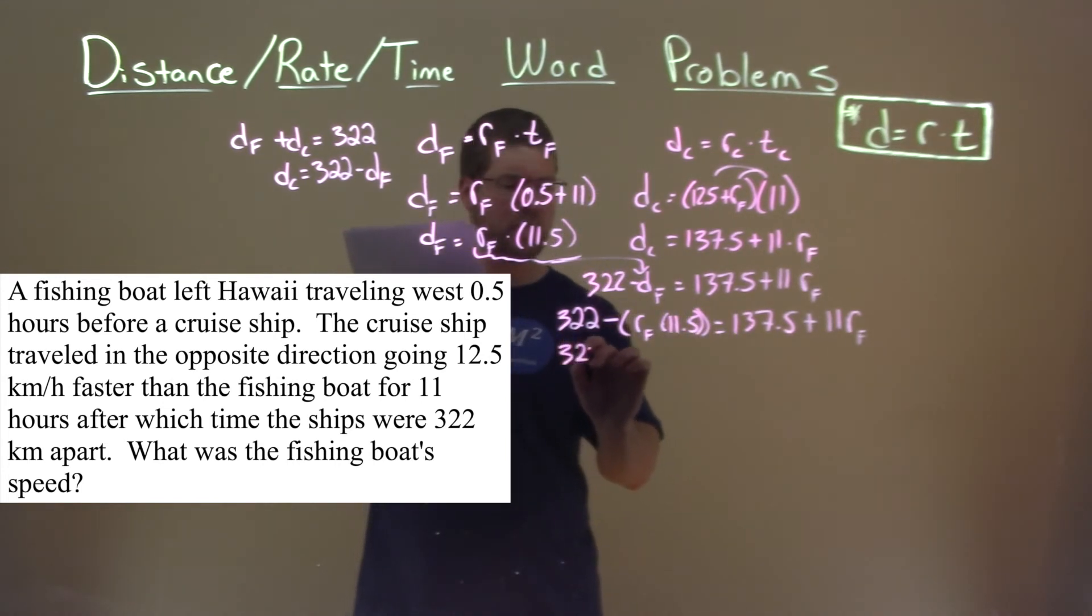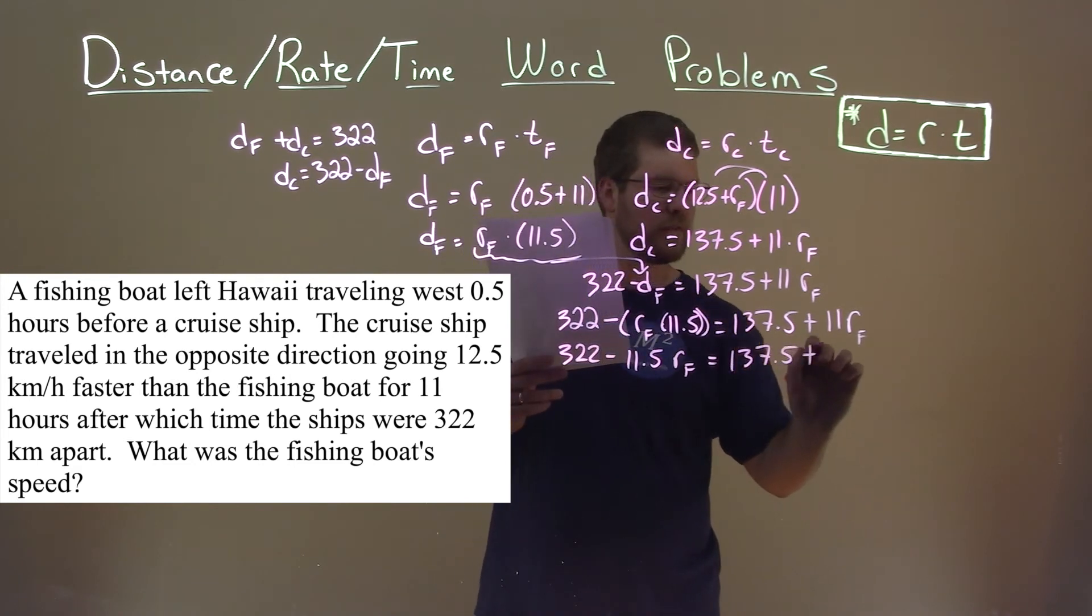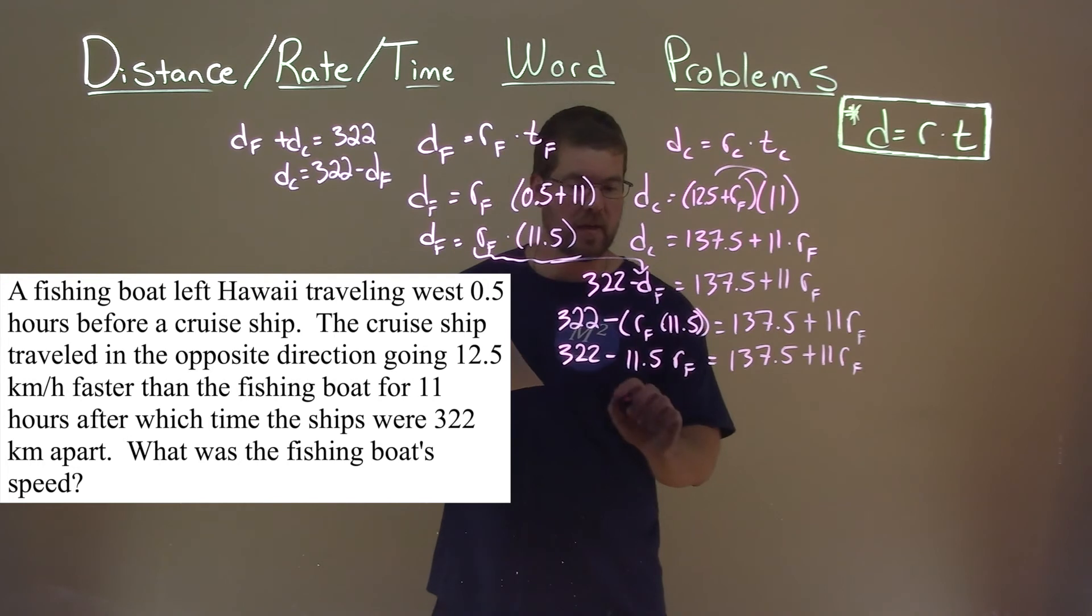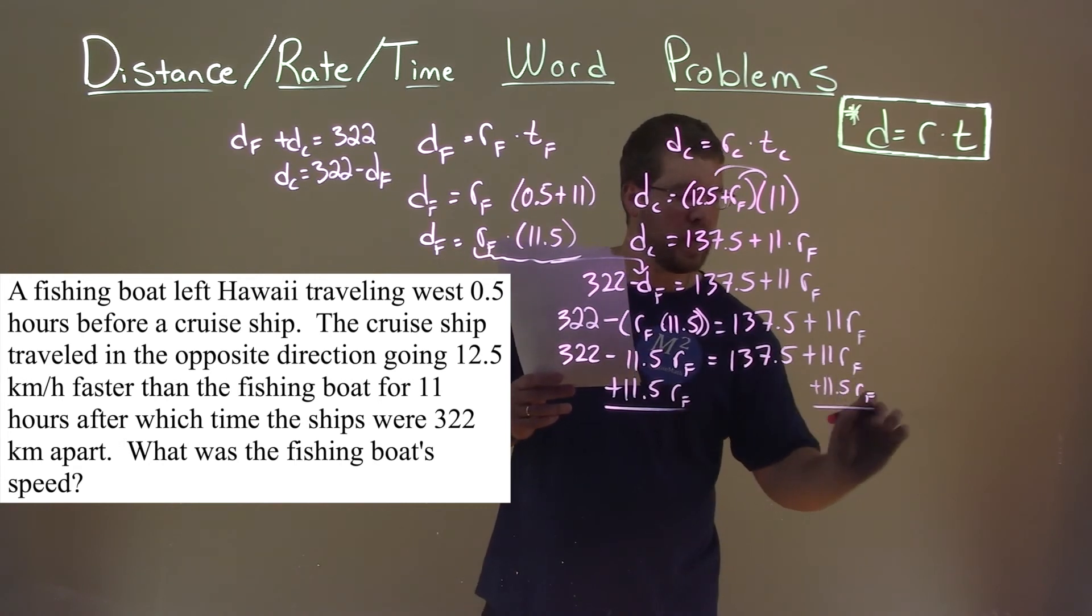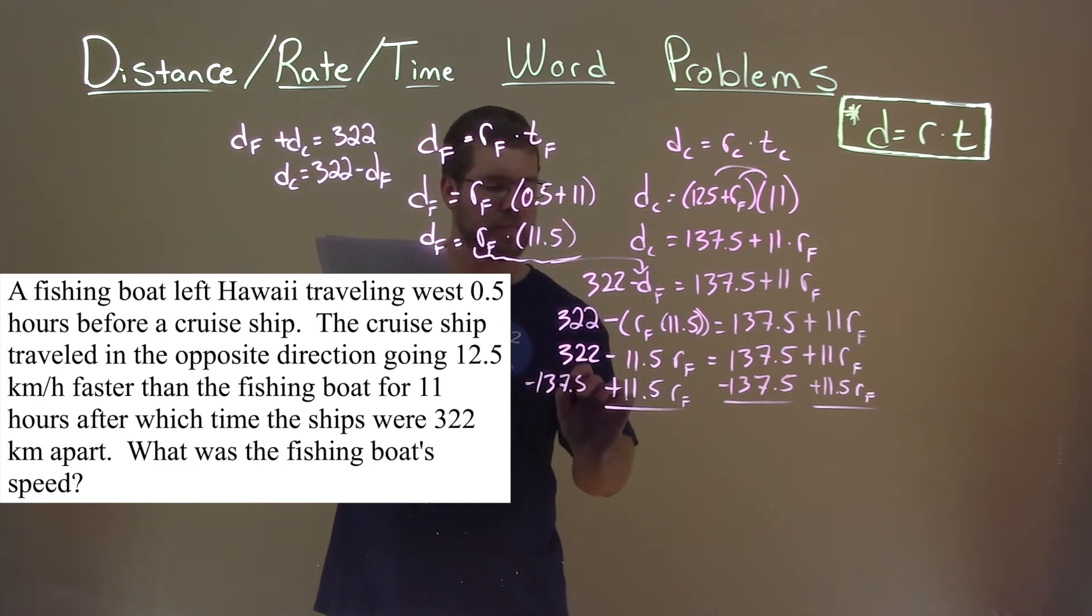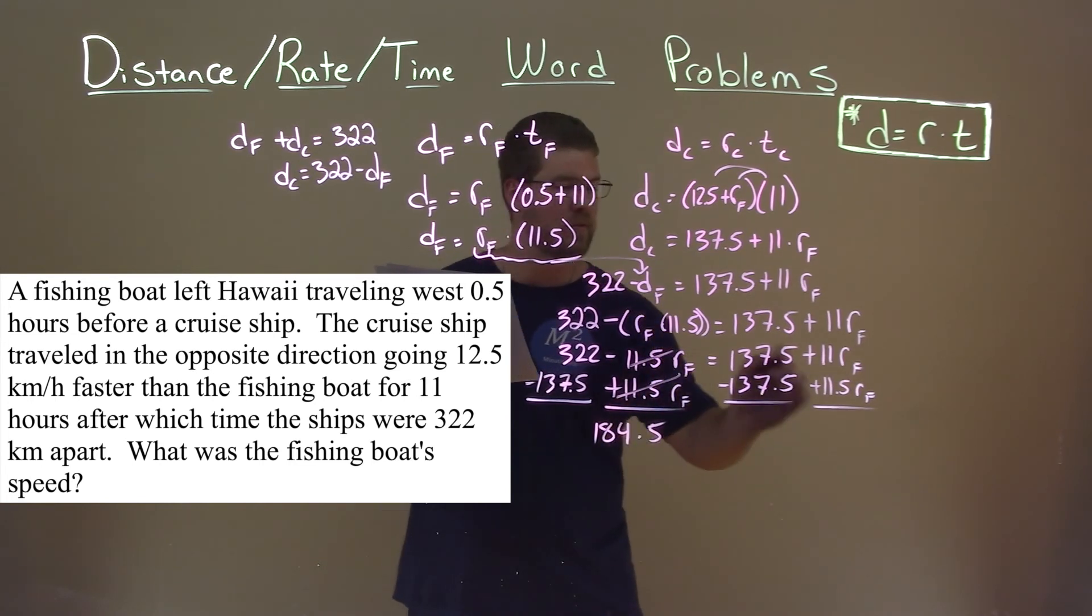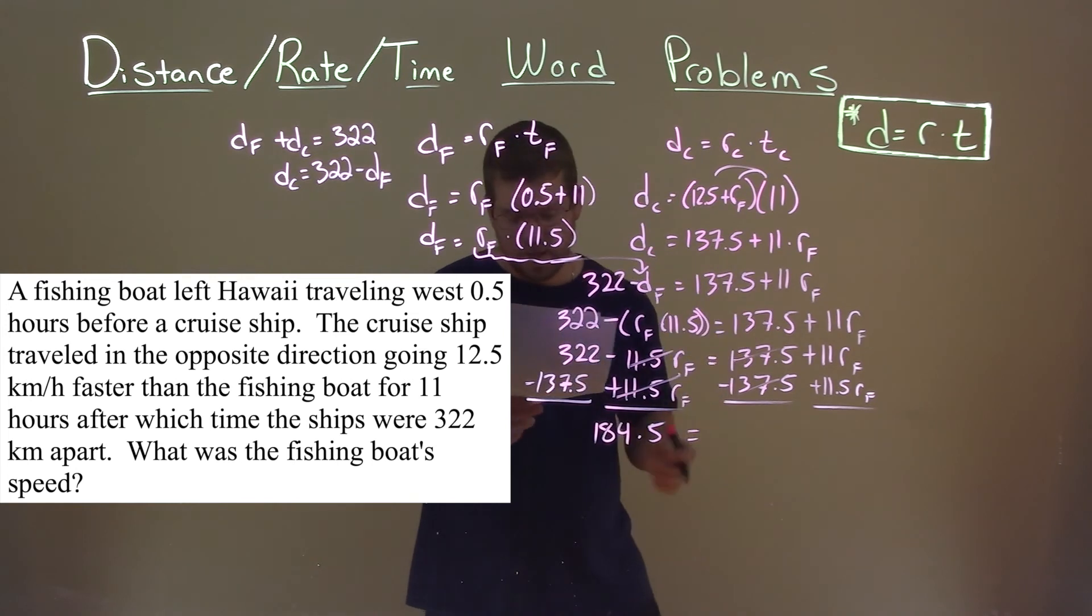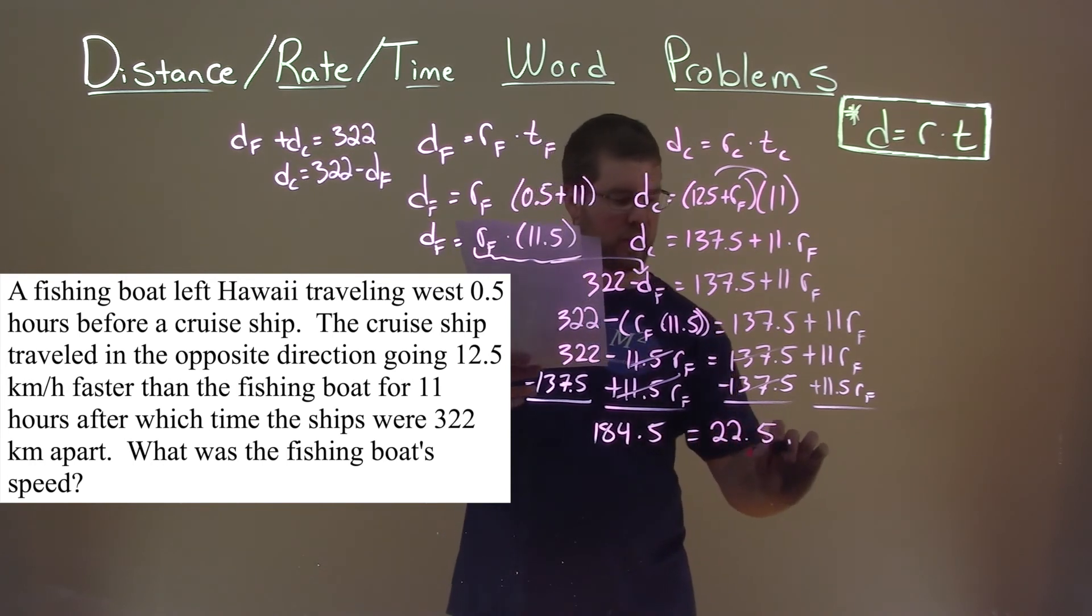I'm going to rewrite this a little bit. 322 minus, I'm going to put 11.5 first so it's clear, R sub F is equal to 137.5 plus 11 R sub F. Let's bring our like terms together. I'm going to add 11.5 R sub F to both sides here. And then I'm going to subtract 137.5, put it to the other side. 322 minus 137.5 is 184.5. These cancel, and these will cancel. And that's equal to 11 R sub F plus 11.5 R sub F, which is 22.5 R sub F.